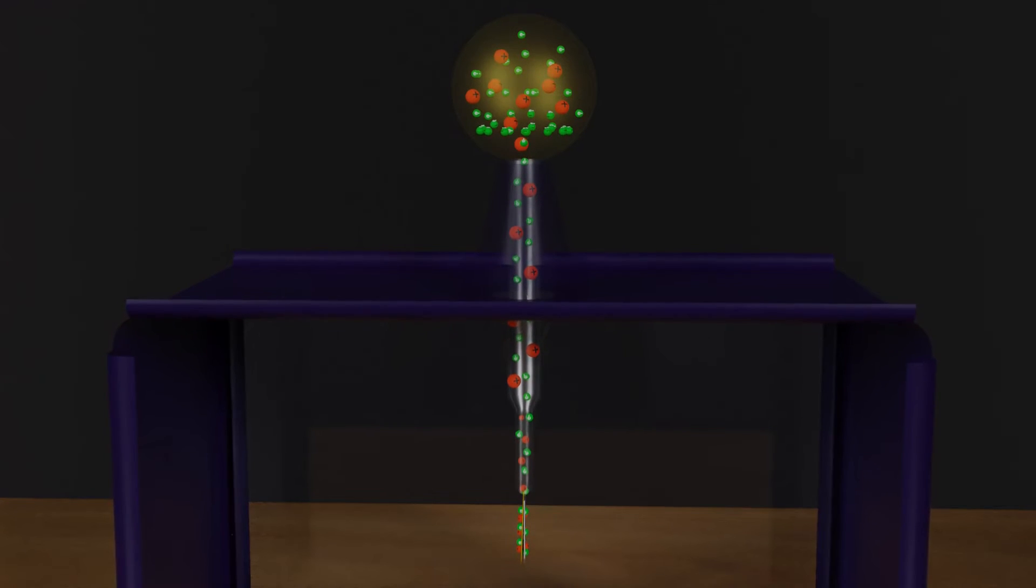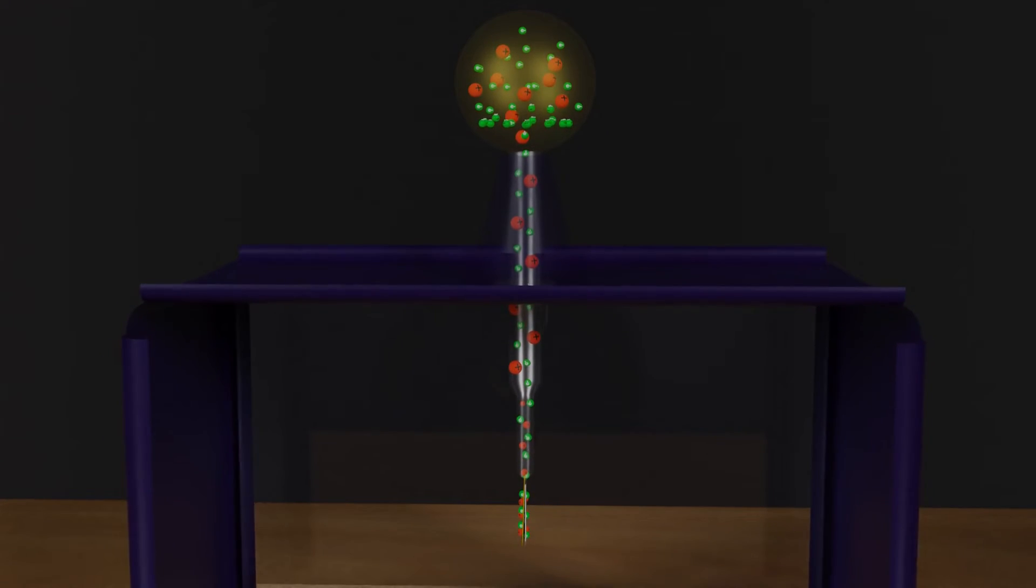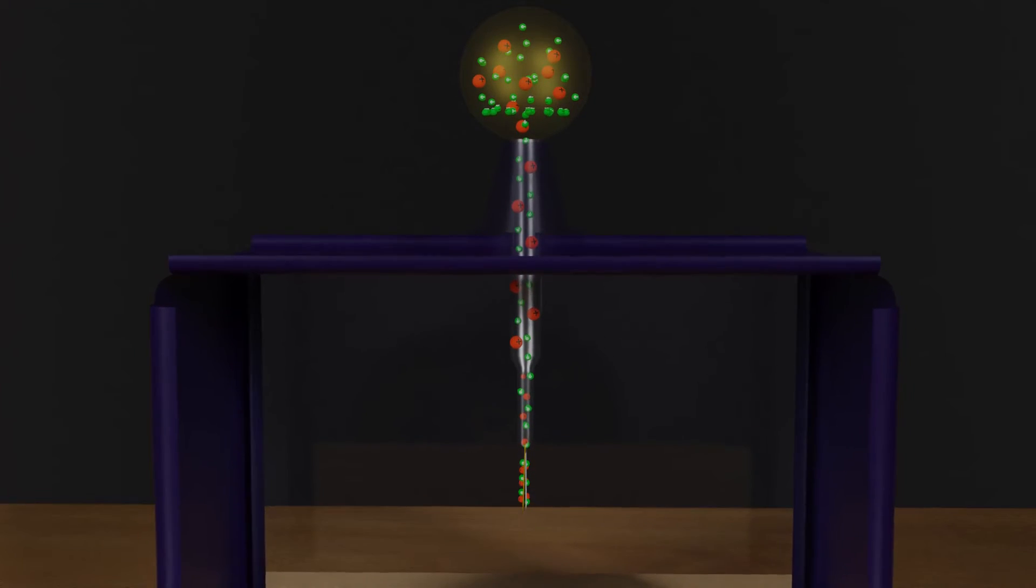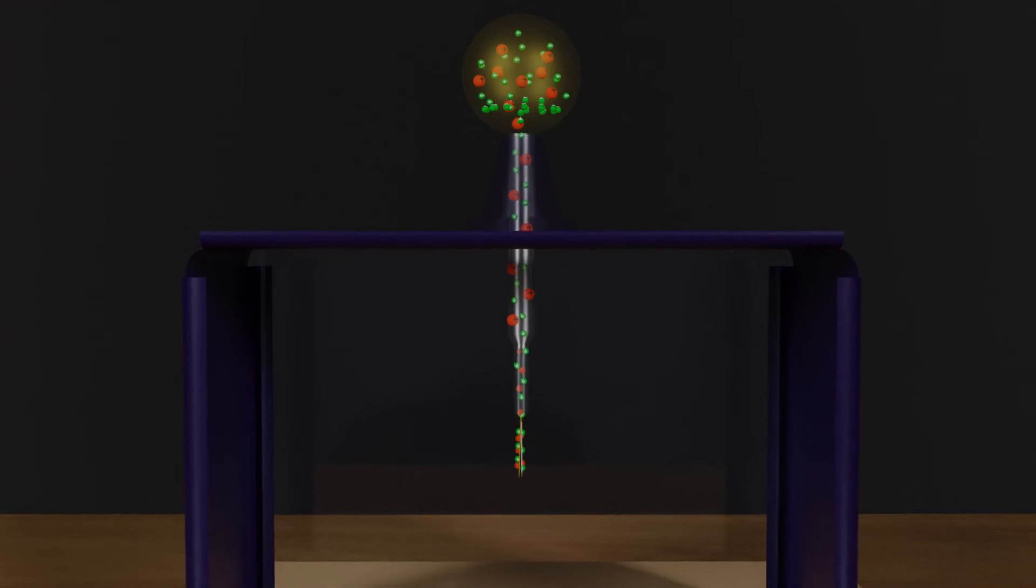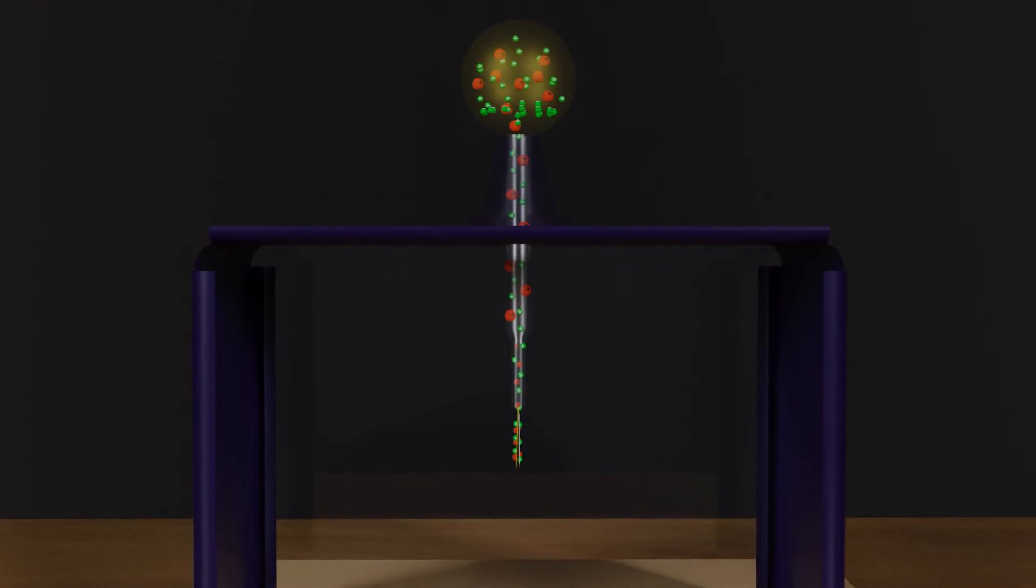The amount of deflection observed in a gold leaf gives us an estimate of the magnitude or strength of the charge present on the rod. A greater deflection indicates that the charge on the rod is stronger in magnitude.